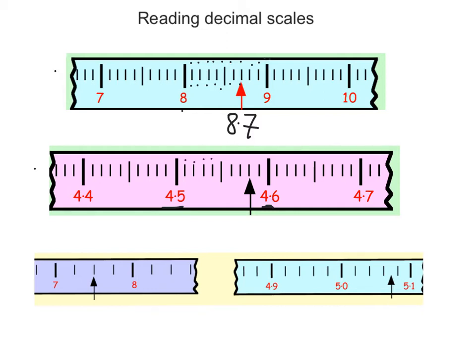So we've got 1, 2, 3, 4, 5, 6, 7, 8, 9, 10. So there's 10 of them. So each one of these lines is a hundredth.